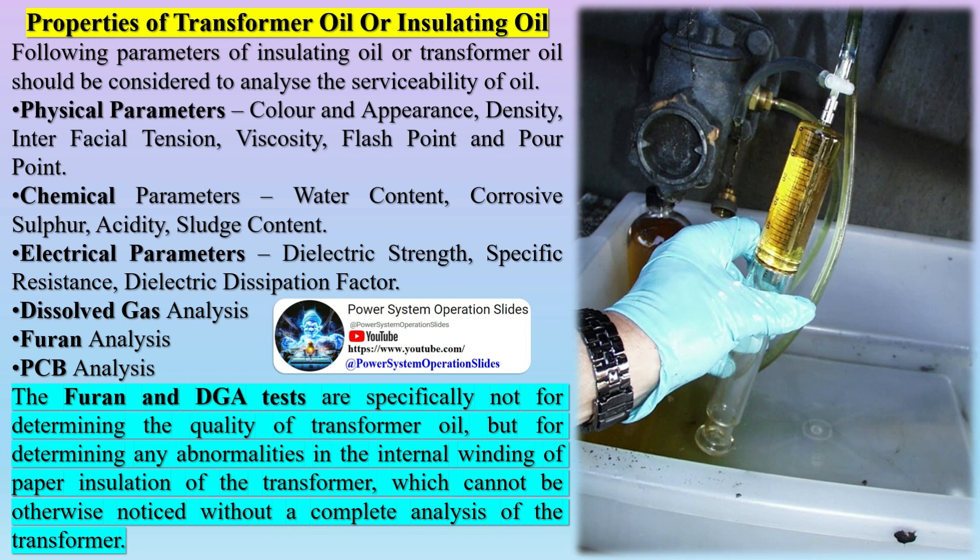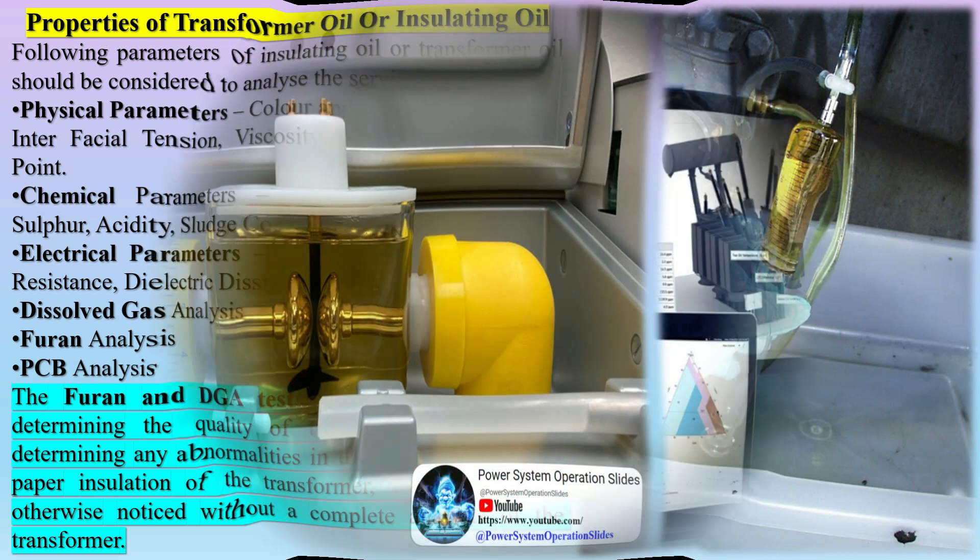The furan and DGA tests are specifically not for determining the quality of transformer oil, but for determining any abnormalities in the internal winding or paper insulation of the transformer, which cannot otherwise be noticed without a complete analysis of the transformer.